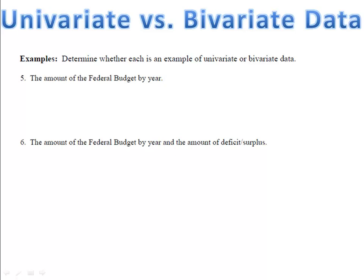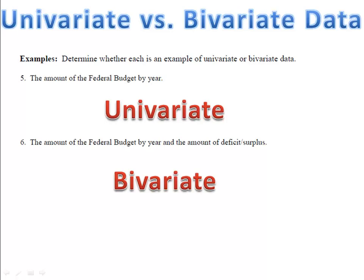Examples 5 and 6 are for you to try. Example 5 discusses the federal budget by year — the amount of money the government plans to spend. Example 6 talks about the deficit or surplus. Deficit is the amount of money we're short and have to borrow. Surplus means we have more money than we intend to spend. In example 5, we have just the amount of the federal budget — that's univariate data. In example 6, we have the budget as well as the amount of deficit or surplus — two columns, budget and deficit — so that's bivariate data.